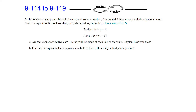There are a couple of ways to do these problems. What I'm looking at is if we can put these into slope-intercept form and then compare the slopes and the y-intercepts. So I'm going to take Paulina's equation — 4x plus 2y equals 6 — and subtract 4x from both sides. That gives me 2y equals negative 4x plus 6. Divide everything by 2 and y equals negative 2x plus 3.